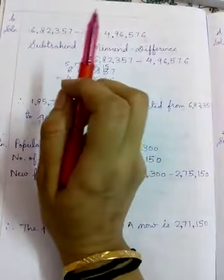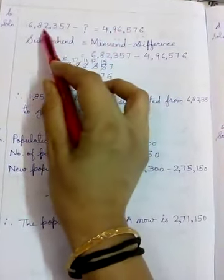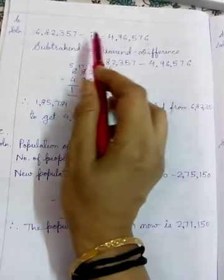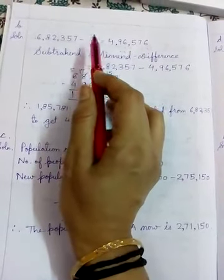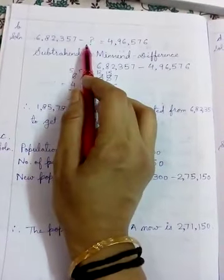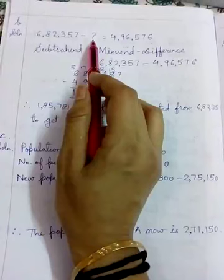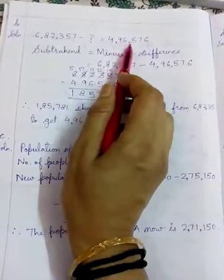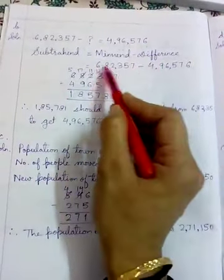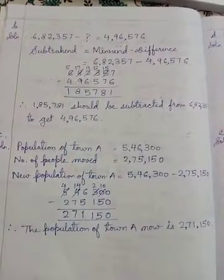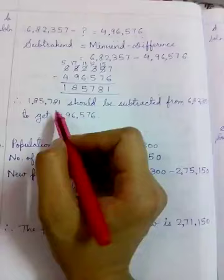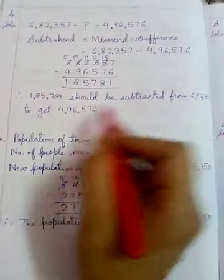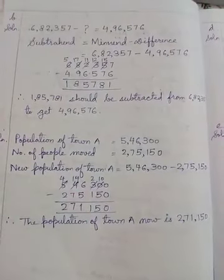Next question: What number should be subtracted from 682,357 to get 496,576? What is missing here? The subtrahend is missing. For finding the subtrahend, what do we need to do? We have to subtract the difference from the minuend. I have written the formula and then did the calculation. At last, the conclusion is written based on the question: This number should be subtracted from the given number to get 496,576.